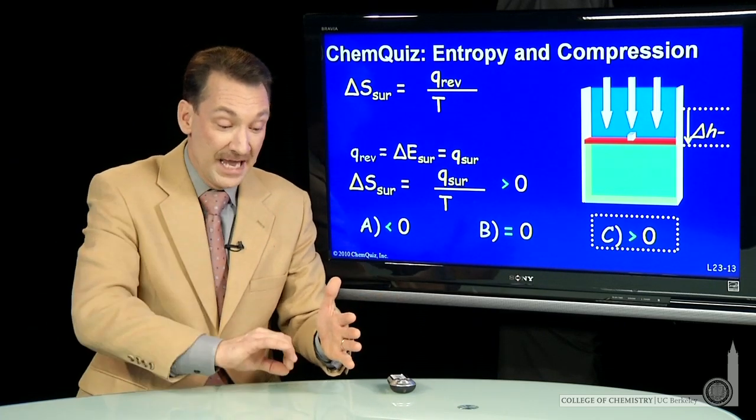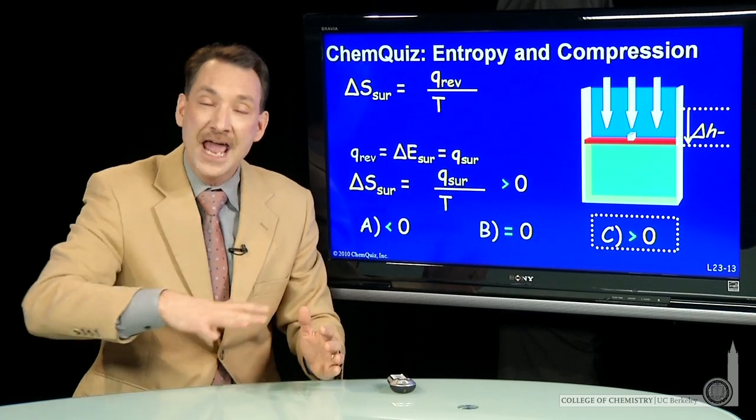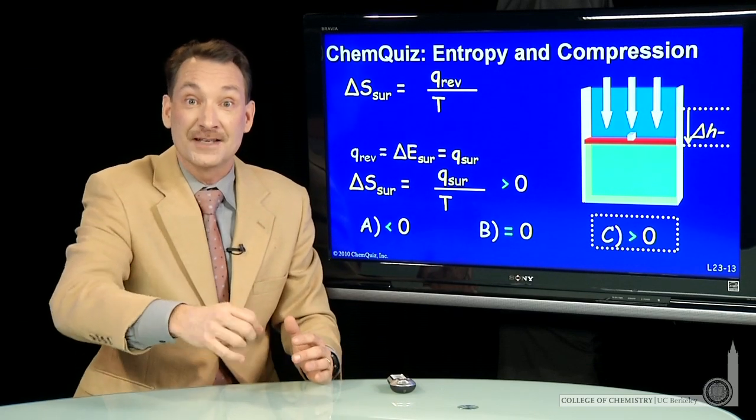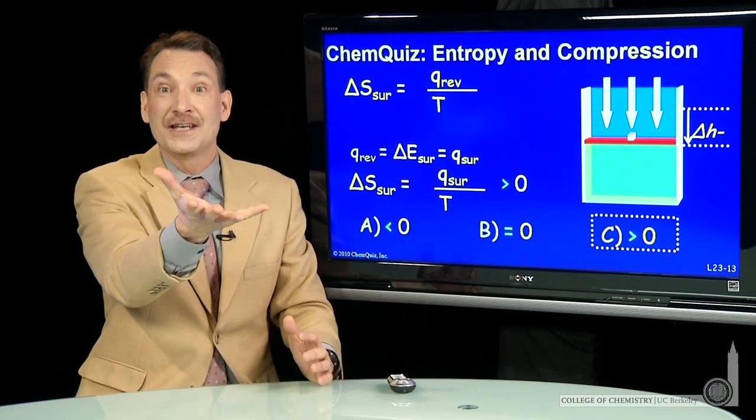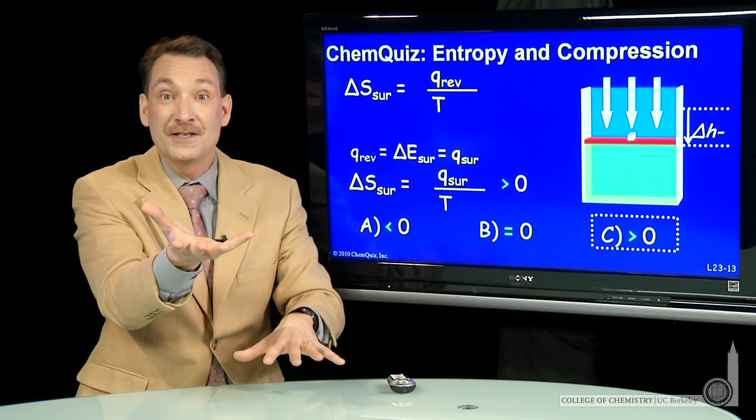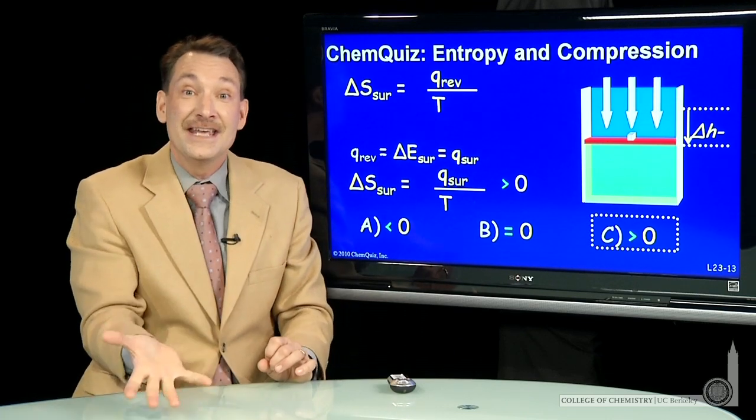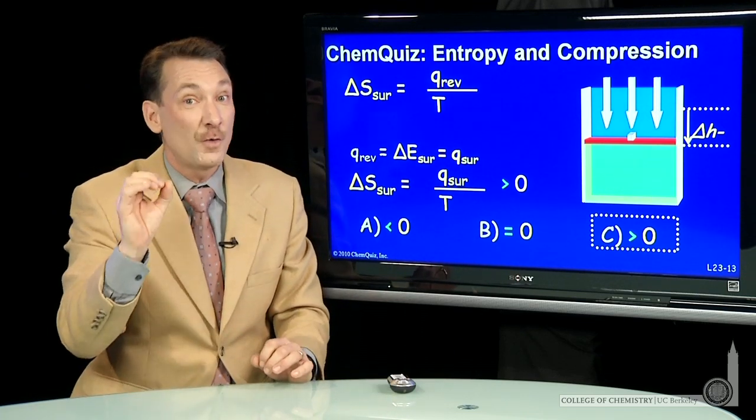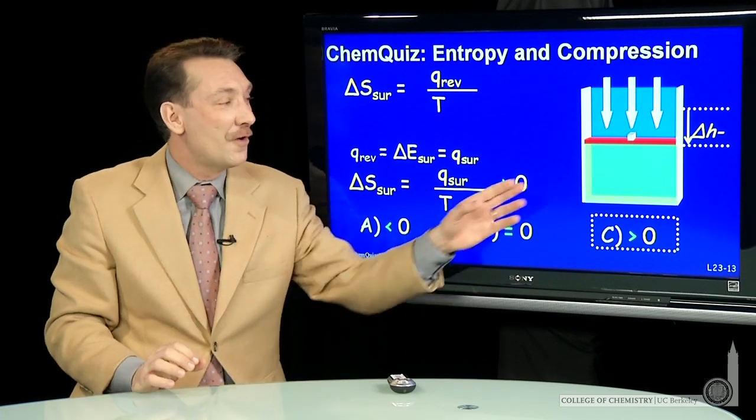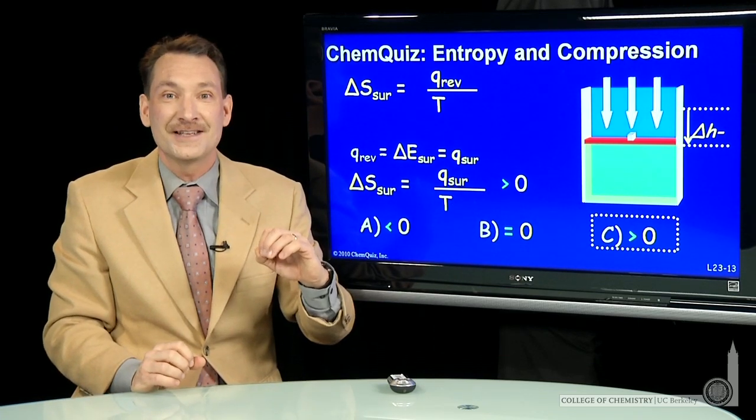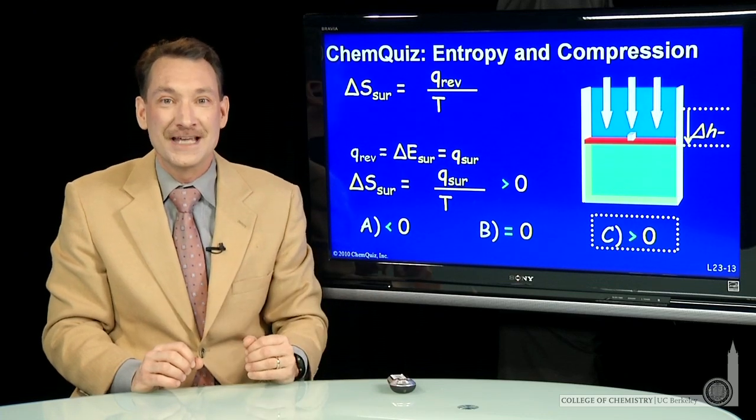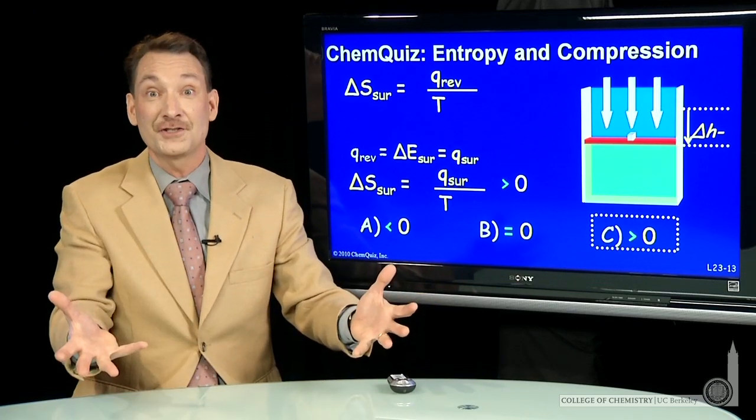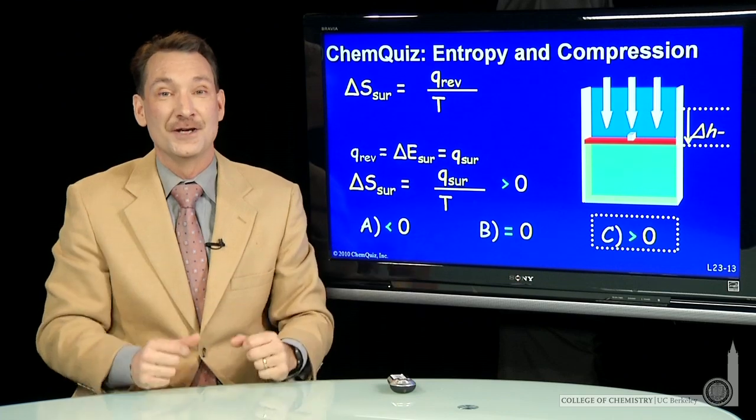But in doing that, heat flowed out into the surroundings and raised the entropy of the surroundings. So increase in entropy of the surroundings, decrease in the system. And that increase in the surroundings outweighs the decrease in the system. So for overall this process, the entropy of the universe will increase. The system plus the surroundings will get a net increase in entropy.